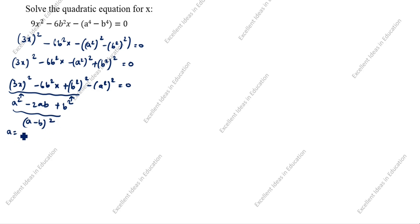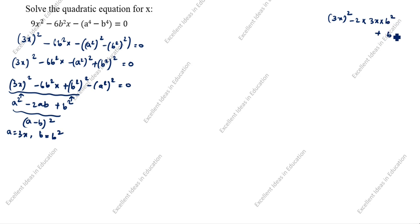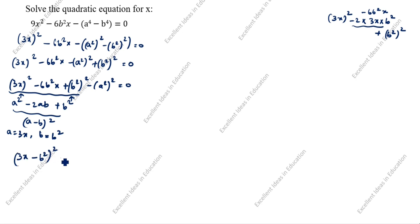So what is a here? a = 3x, b = b². Now we will expand: a² is (3x)², minus 2×a×b is 2×3x×b², plus b² is (b²)². You see this gives 2×3=6, so minus 6b²x — the answer comes out right. Next step: (3x minus b²)² minus (a²)² is equal to 0.